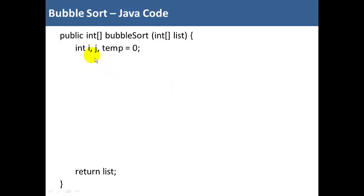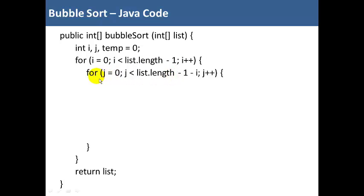So we're returning the same list but in sorted order. So variables, we're going to use i for our outer loop, j for the inner loop, and a temp variable to do the swaps. Our outer loop is going to run from 0 to the length of the list minus 1. And the inner loop is going to run from 0 to the length of the list minus i, minus the number of items that are already sorted, which is the number of iterations we've already completed, so i.